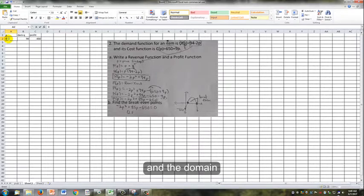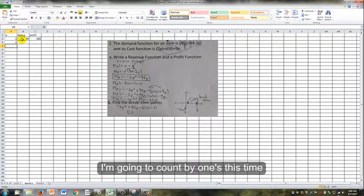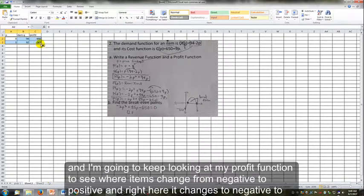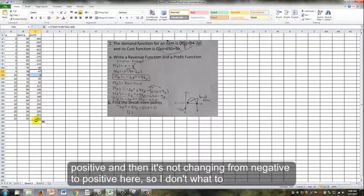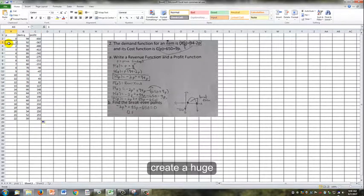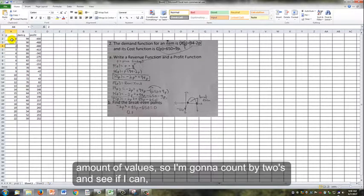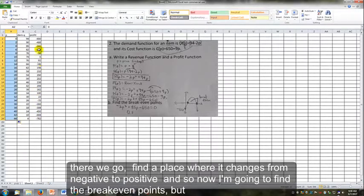For the domain, I'm going to count by 1s this time, and I'm going to keep looking at my profit function to see where items change from negative to positive. Right here, it changes from negative to positive, and then it's not changing from negative to positive here. So I don't want to create a huge amount of values. I'm going to count by 2s and see if I can find a place where it changes from negative to positive. Now I'm going to find my break-even points.